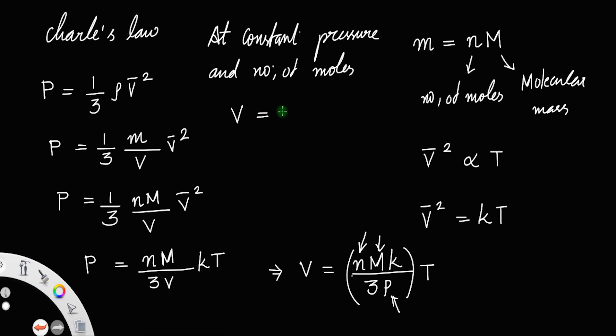So you can call that as some k dash times T, which means volume of a given mole of a gas at constant pressure is proportional to absolute temperature. That is Charles' law there.